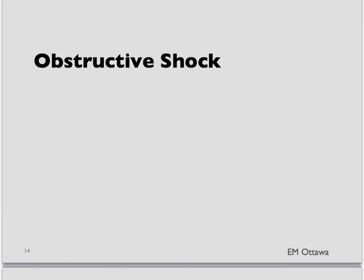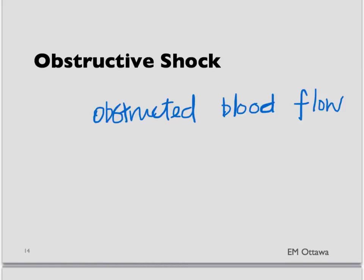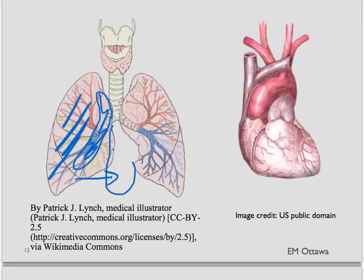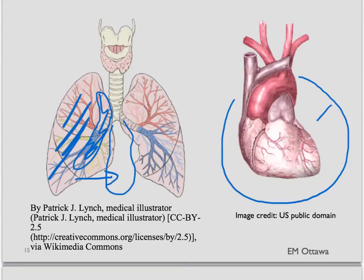Next, obstructive shock. It happens when there's blockage of blood flow from the heart, and it can happen for a few different reasons. In a tension pneumothorax, the collapsed lung causes air to fill the space, squeezing the mediastinum to the other side and decreasing blood flow from the heart. In a cardiac tamponade, there's lots of fluid in the pericardium that squeezes the heart to decrease blood flow. Also, if there is a pulmonary embolus, the pulmonary blood flow is obstructed, causing decreased blood going out from the heart.